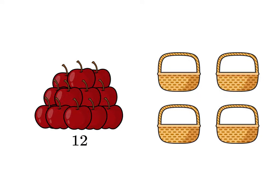Here are 12 apples and 4 baskets. Each basket will be filled with the same number of apples. How many apples will go in each basket? Since the total number of apples is given, divide the total by the number of baskets.